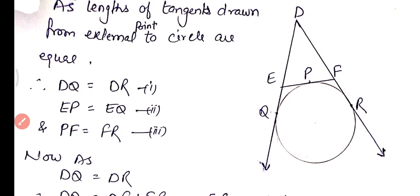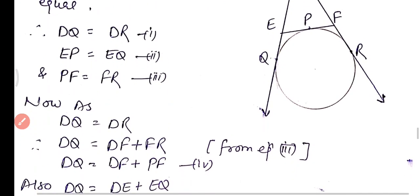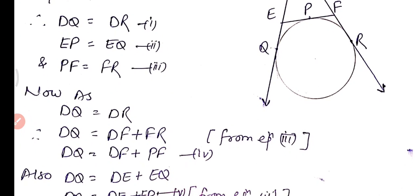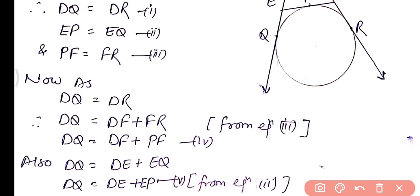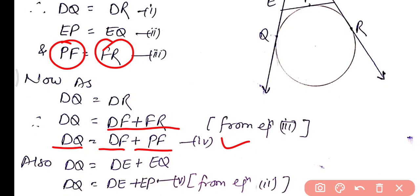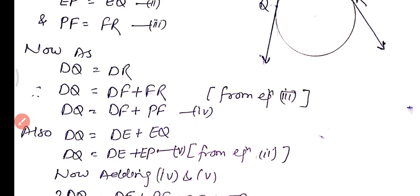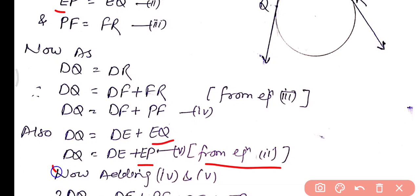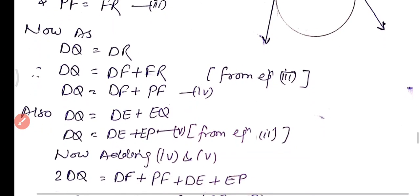DR has two parts: DF + FR, and FR can be replaced by FP, so DQ = DF + FP — equation four. Also DQ = DE + EQ, and EQ can be replaced by EP, so DQ = DE + EP — equation five.